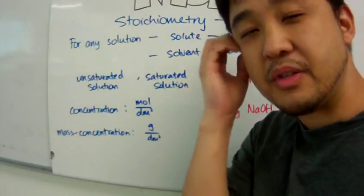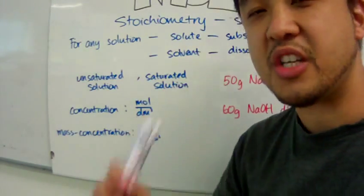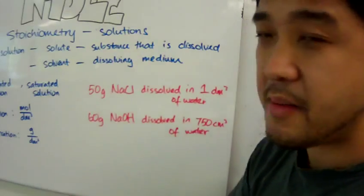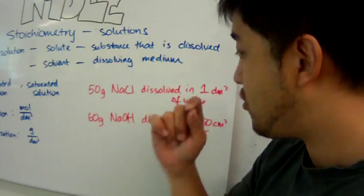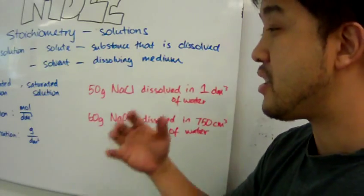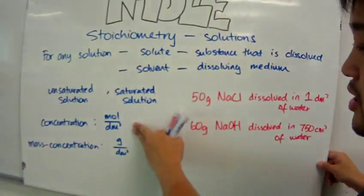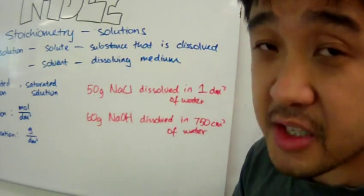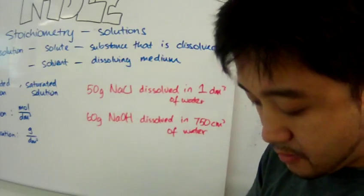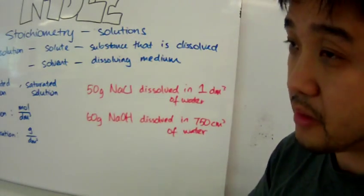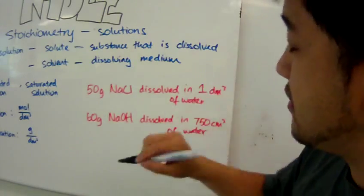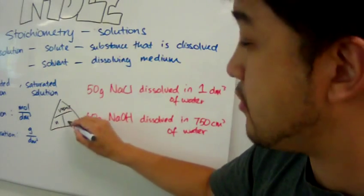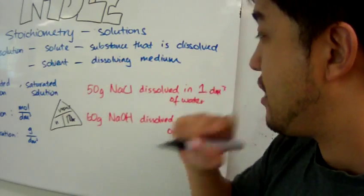Let's take two examples and calculate concentration and mass concentration for each. First: 50 grams of sodium chloride is dissolved in 1 cubic decimetre of water. To calculate the concentration, you need moles, so we need to convert the mass of sodium chloride to moles using the triangular relationship between mass and moles — the molar mass.